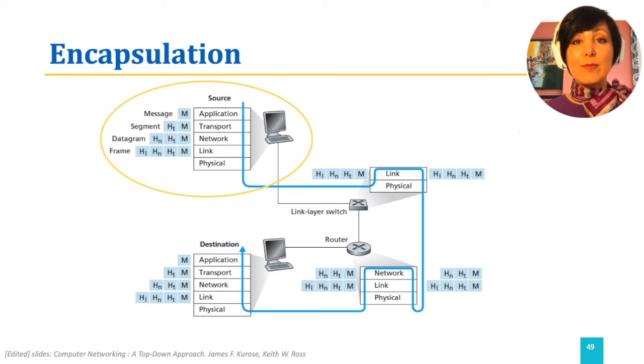Then the transport layer segment is passed to the network layer where the network layer header is added to it. At this stage, the packet of information is called a datagram.